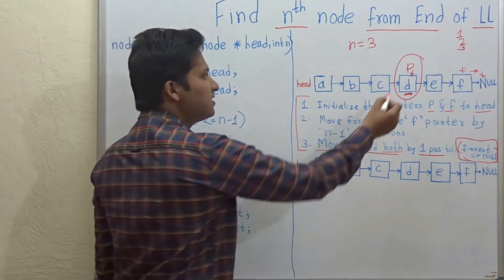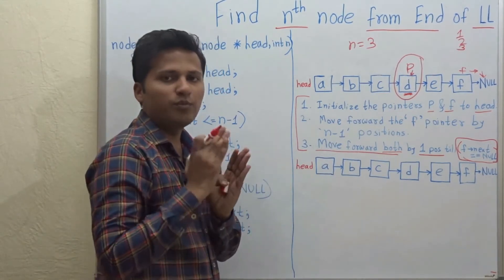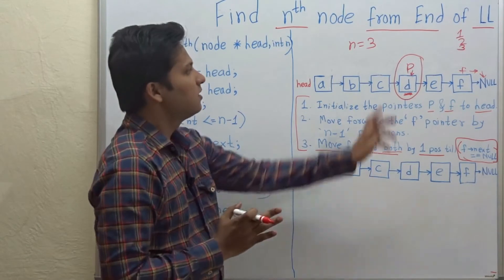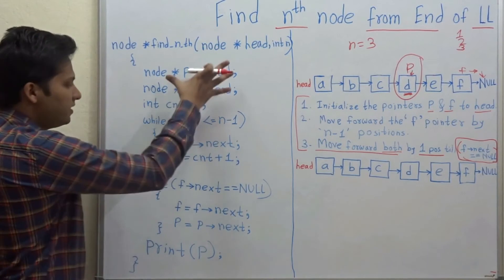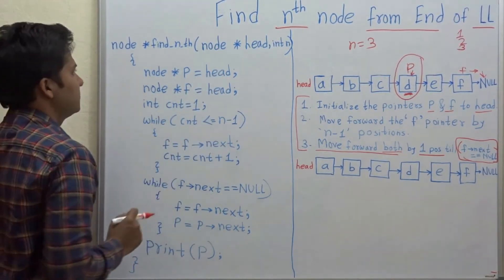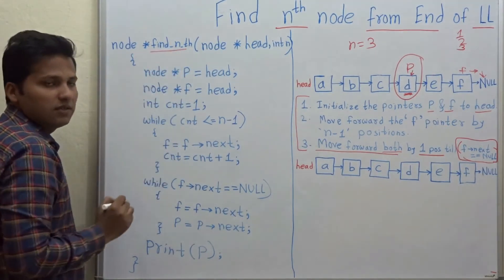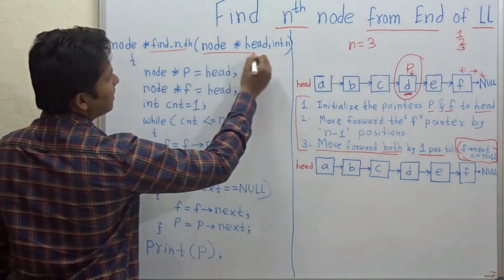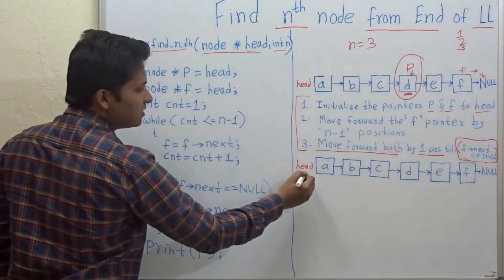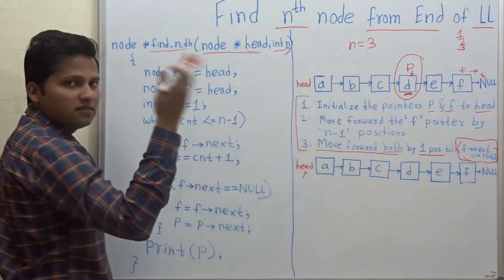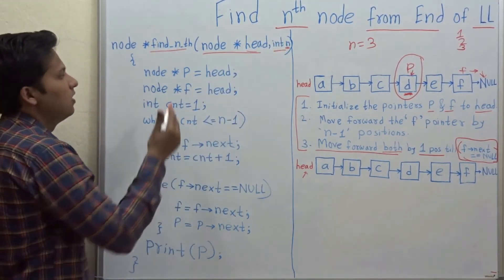So this is our answer. When we break from the while loop, the node to which pointer p points is our answer. Now let's see the code. The name of the function is findNth and there are two parameters: the head of the linked list and n, the nth node.